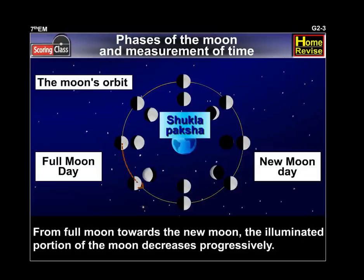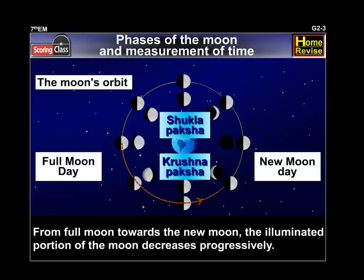From Full Moon towards the New Moon, the illuminated portion of the Moon decreases progressively. This period is called Krushna Paksha.